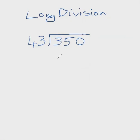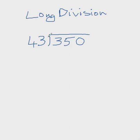We're looking at long division. The first thing we need to do is decide where we write the first digit of our quotient, which is our answer. To decide that, we ask: does 43 go into 3? And the answer is no, so we won't write anything there.